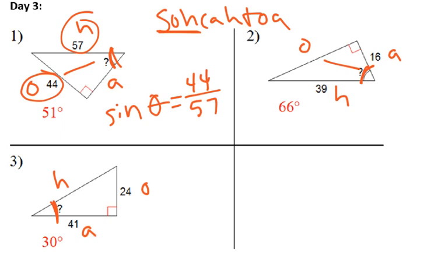Number two, same idea. This one's connecting adjacent and hypotenuse, so that's cosine. Cosine of our angle is equal to the adjacent over the hypotenuse.